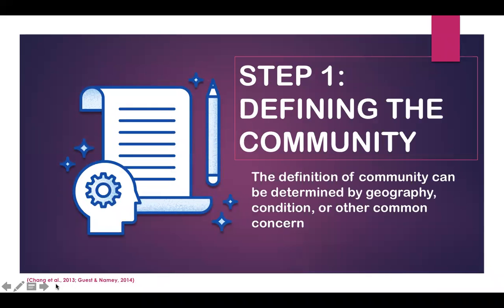Step 1: defining the community. Community can be defined by geography, condition, or other common concerns. For example, in the case study by Chang et al., they defined their community with a common concern for workers' rights among urban immigrants. To work with this community, they considered groups that might represent this population, such as Chinatown restaurant workers in San Francisco, and organizations that serve this community.